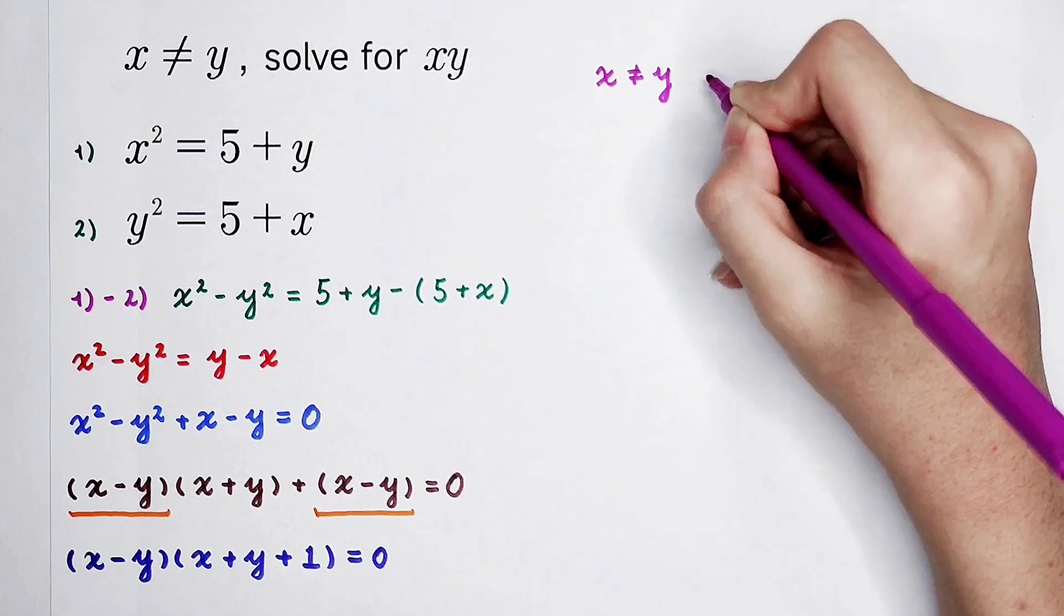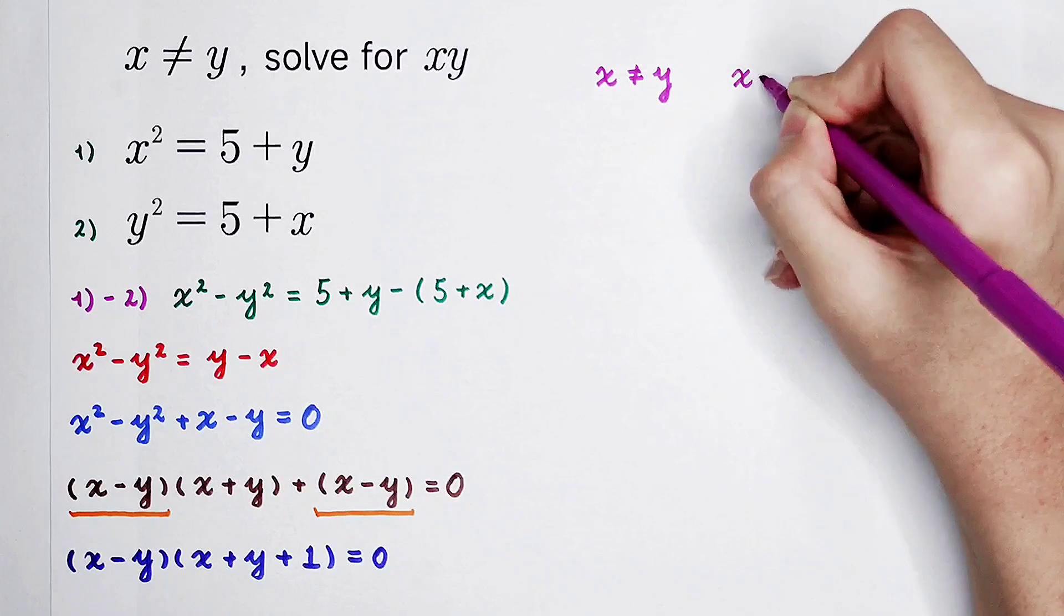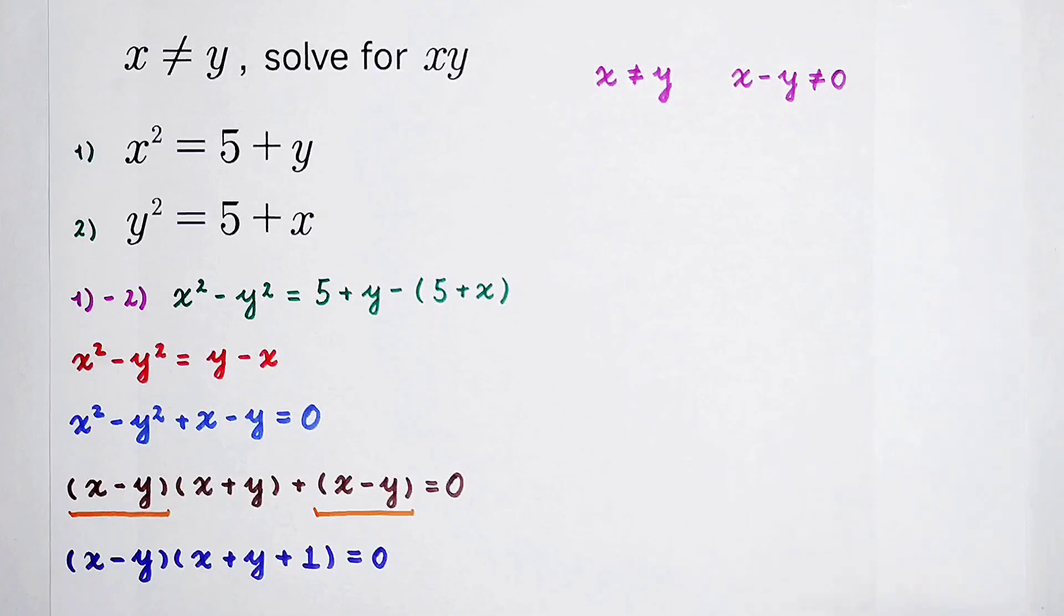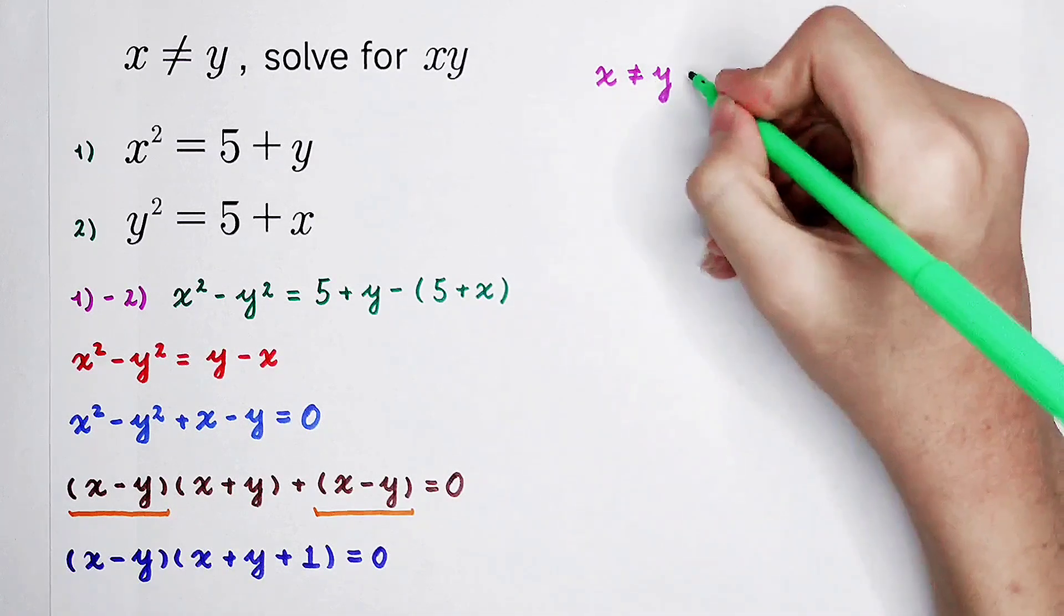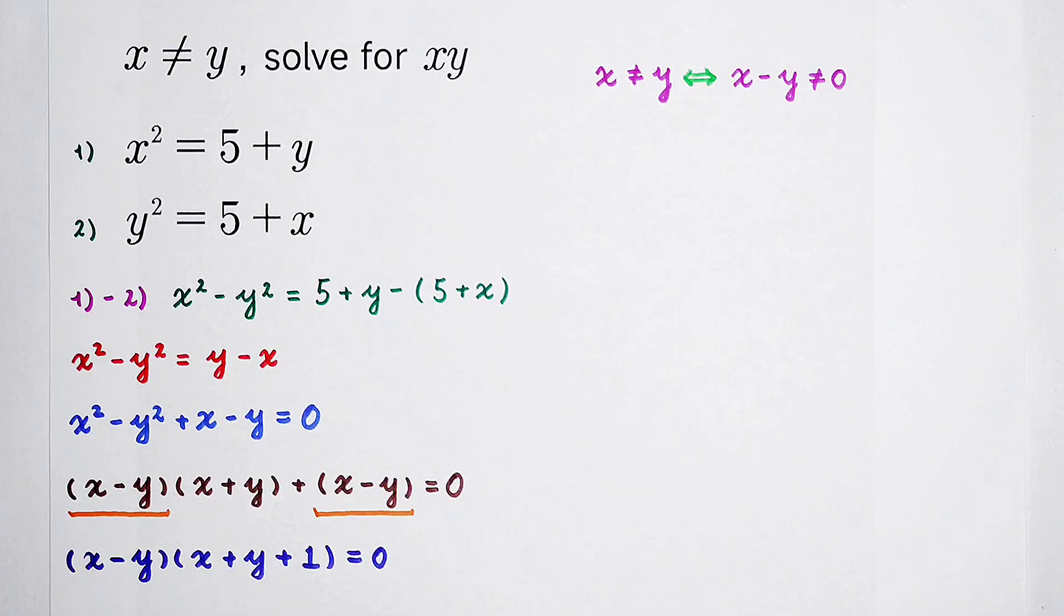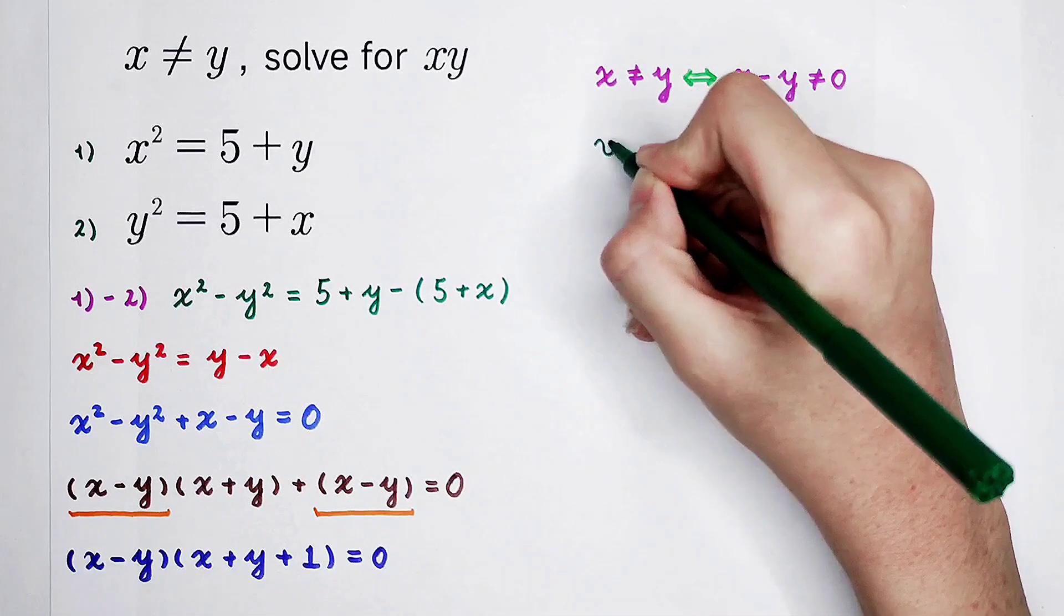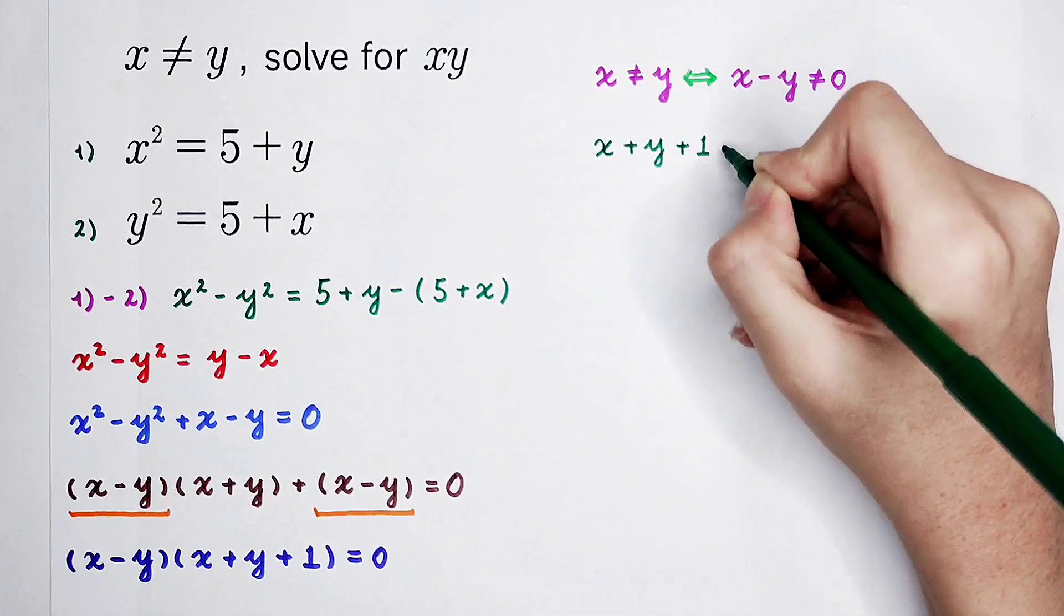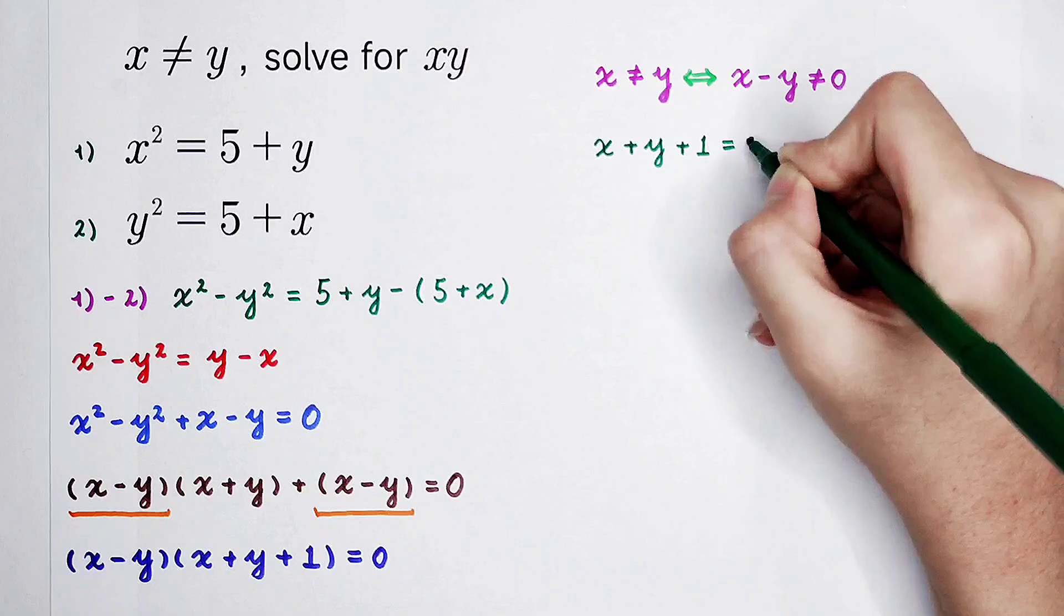So, that means x minus y can't be 0. So, our only case is when x plus y plus 1 equals 0.